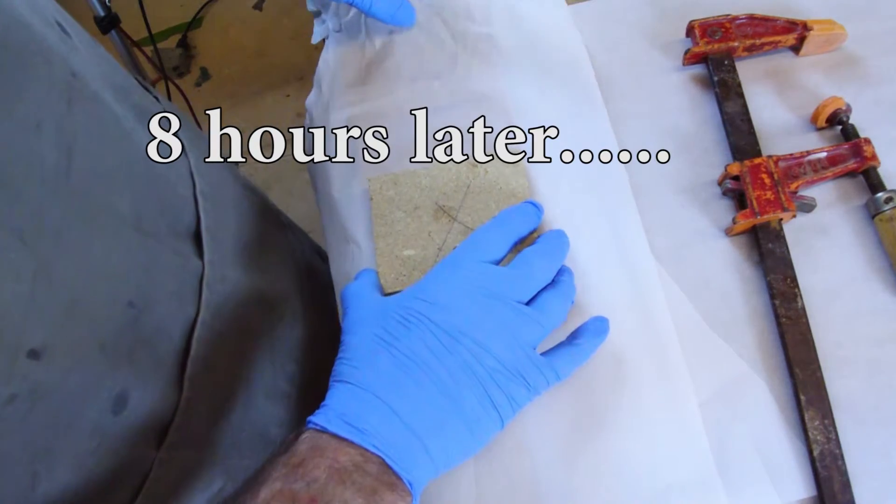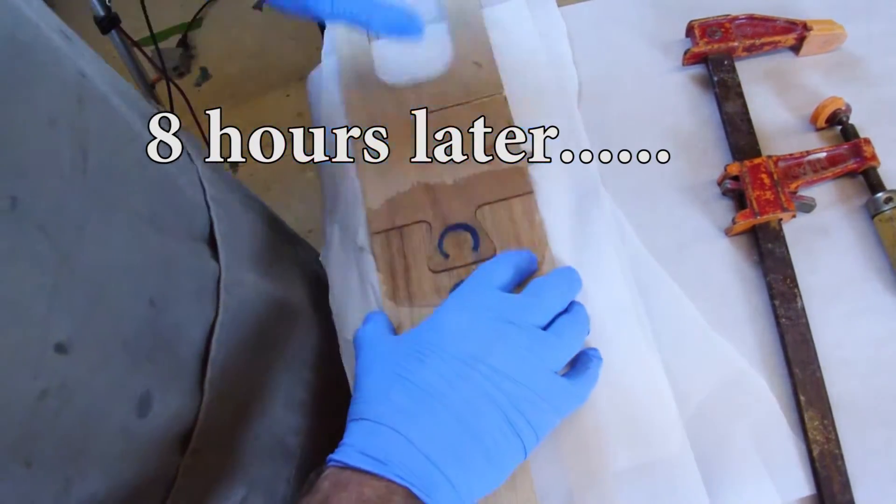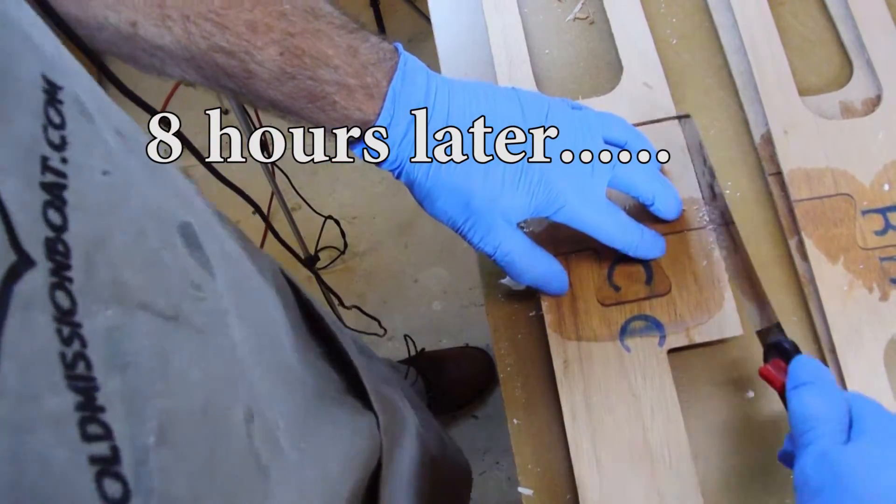Once the pieces have cured, remove the clamp and clean up the edges of the planks using a small hand saw and a hand plane, removing any leftover epoxy.